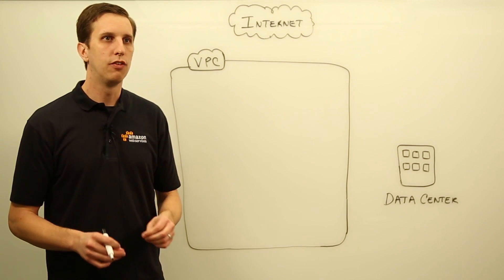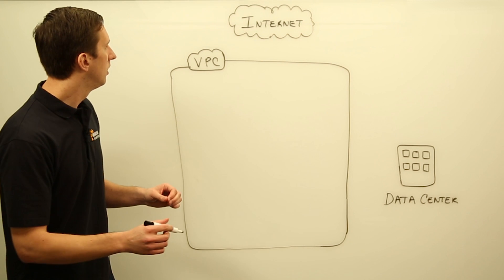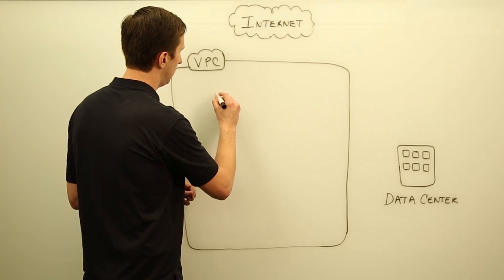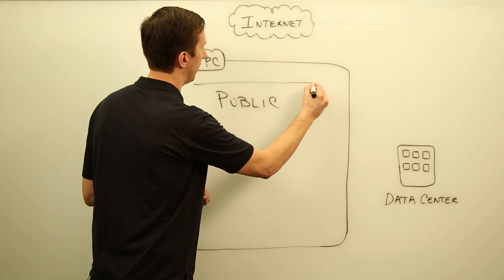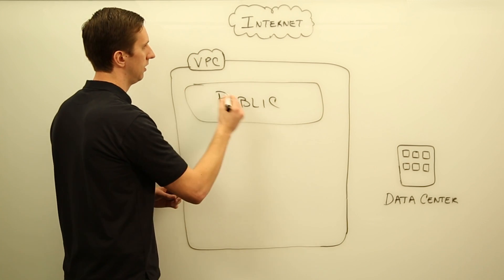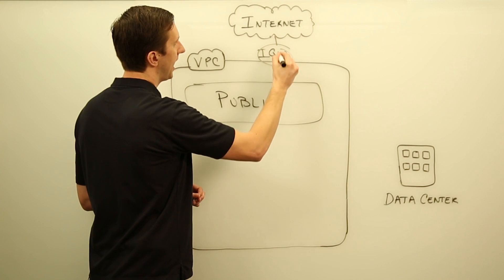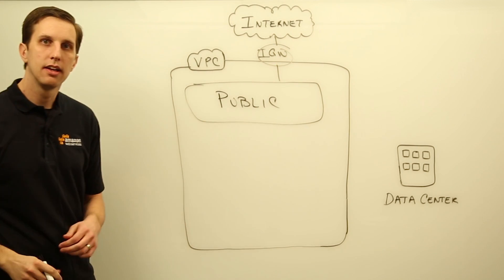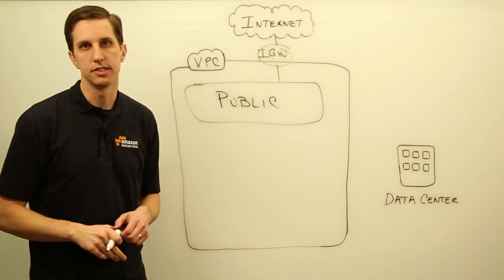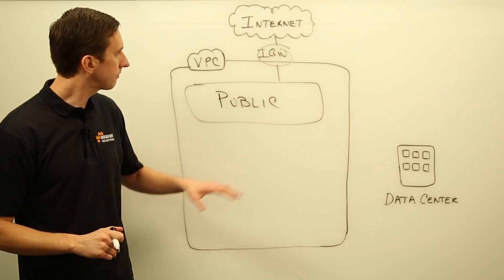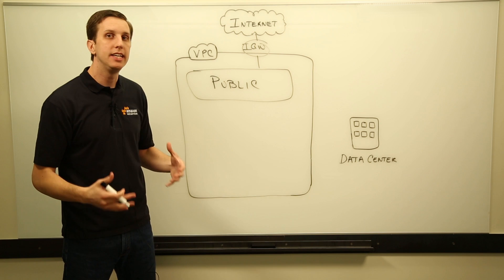Let's start with the first use case, where you might have the need for publicly accessible resources. Within our VPC, we can configure a public subnet. A public subnet will get access to and from the internet through the internet gateway on your Amazon VPC. This is very useful, but over time, you might see that your needs evolve.